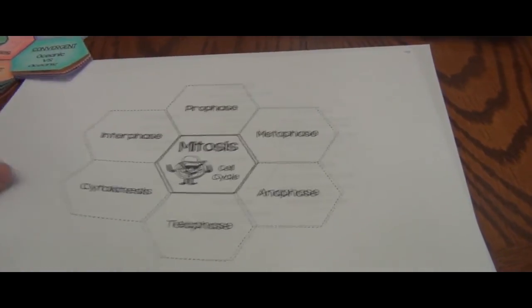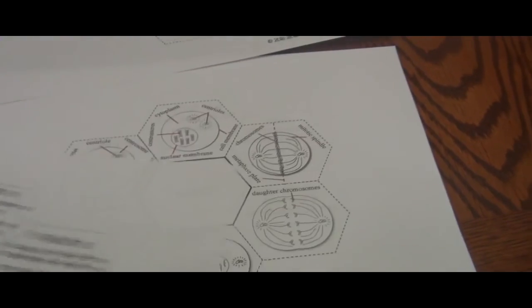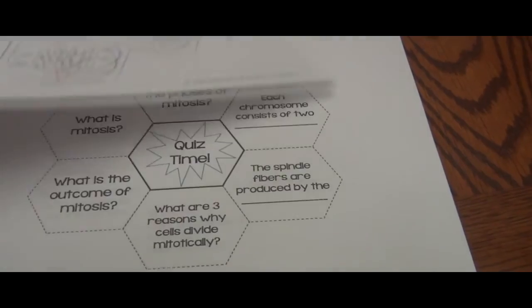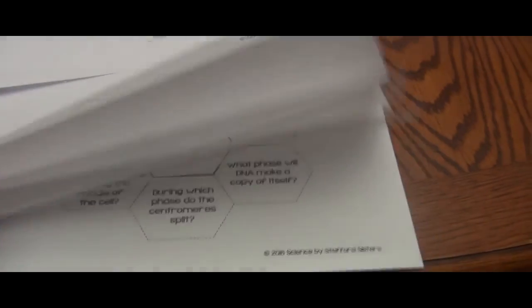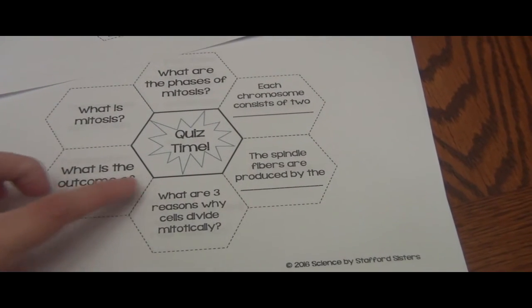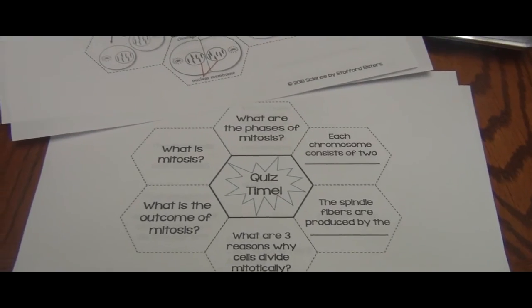Okay, so I already printed what I wanted. The cover page, I printed the features, I also printed the diagrams already with it labeled and then the back side will be my quiz. So I'm going to go ahead, color, cut out on the dotted lines and then I'm going to start gluing.